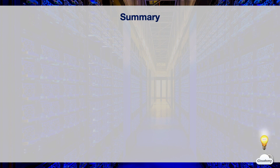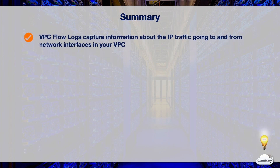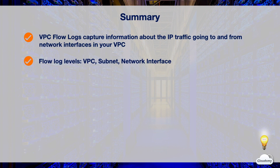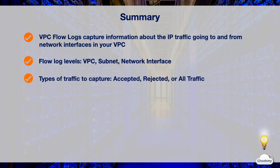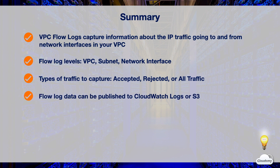In this episode, we've learned about VPC flow logs. VPC flow logs capture information about the IP traffic going to and from network interfaces in your VPC. You can create a flow log for a VPC, subnet, or network interface — all network interfaces in that subnet or VPC are monitored. When you create a flow log, you can specify the type of traffic to capture: accepted traffic, rejected traffic, or all traffic. Flow log data can be published to CloudWatch Logs or S3, and you can retrieve and view its data in the chosen destination.